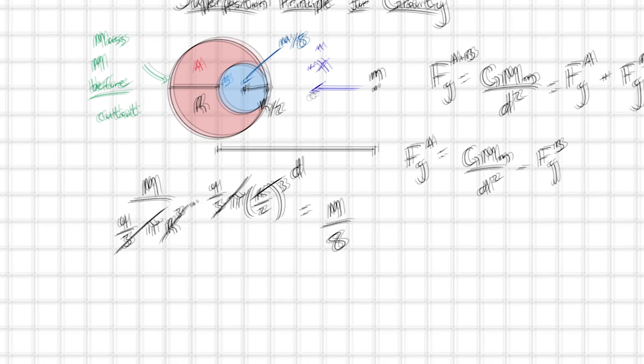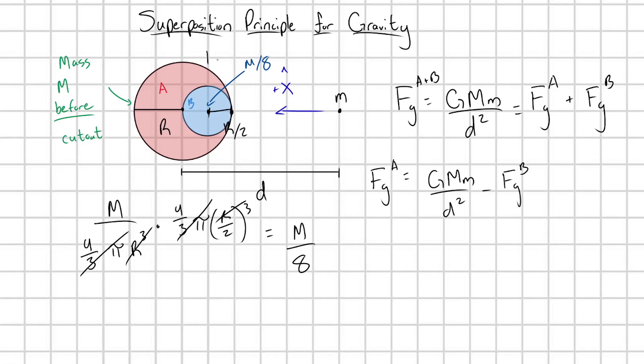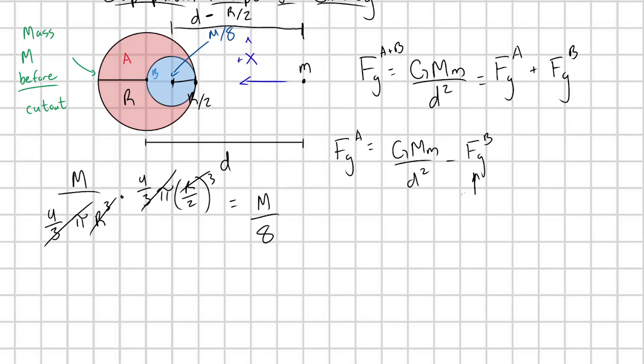And then what's the distance between the center of this planet and this little mass m? So this distance here is going to be this distance little d, but it's a little bit shorter, minus how much shorter? We have this little extra chunk here, R over 2. So this is going to be d minus R over 2 is the distance from the center of subsystem B to our little mass m. Then the force from subsystem B is going to be capital G times, what's the mass of subsystem B? It's M over 8 times little m over what's the distance between our center of this planet and our little mass m. That's going to be d minus R over 2 squared.